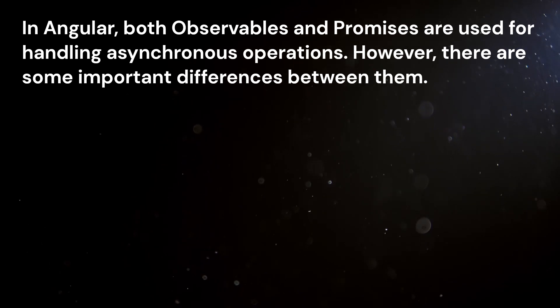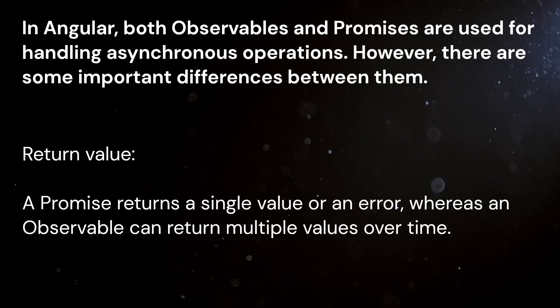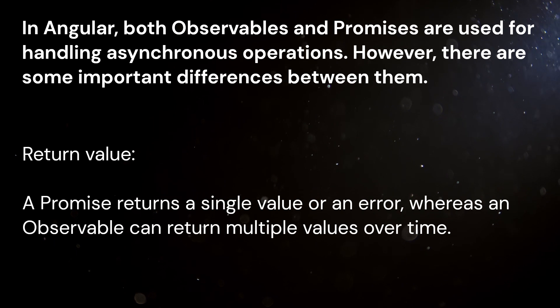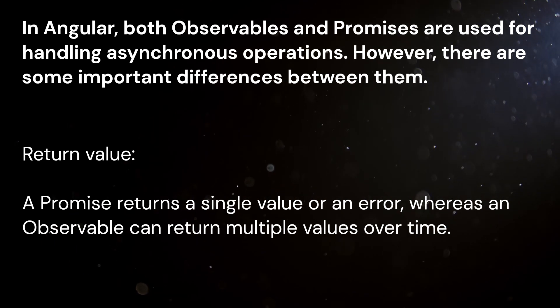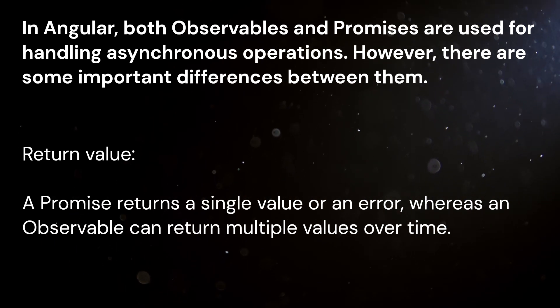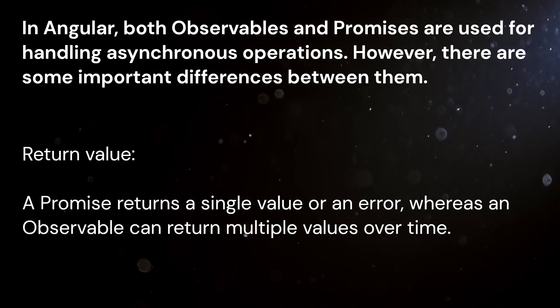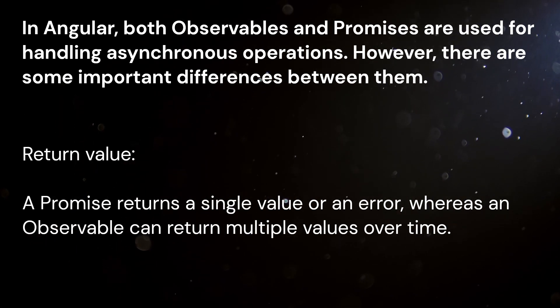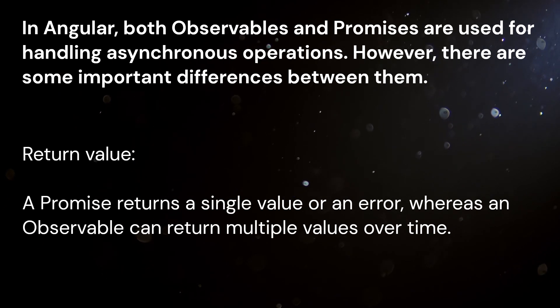Return value: A promise returns a single value or an error, whereas an observable can return multiple values over time.